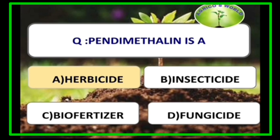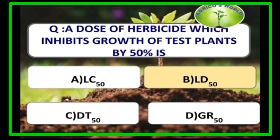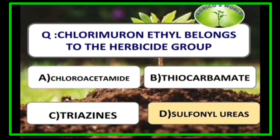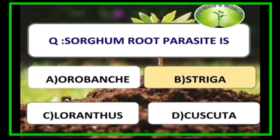Pendimethalin is a pre-emergent herbicide mostly used in oilseeds and pulses. A dose of herbicide which inhibits growth of test plants by 50% is LD50, i.e. lethal dose 50. Chlorimuron ethyl belongs to the sulfonylureas group. Sorghum root parasite is Striga; it is a partial root parasite, whereas Orobanche is a complete root parasite.